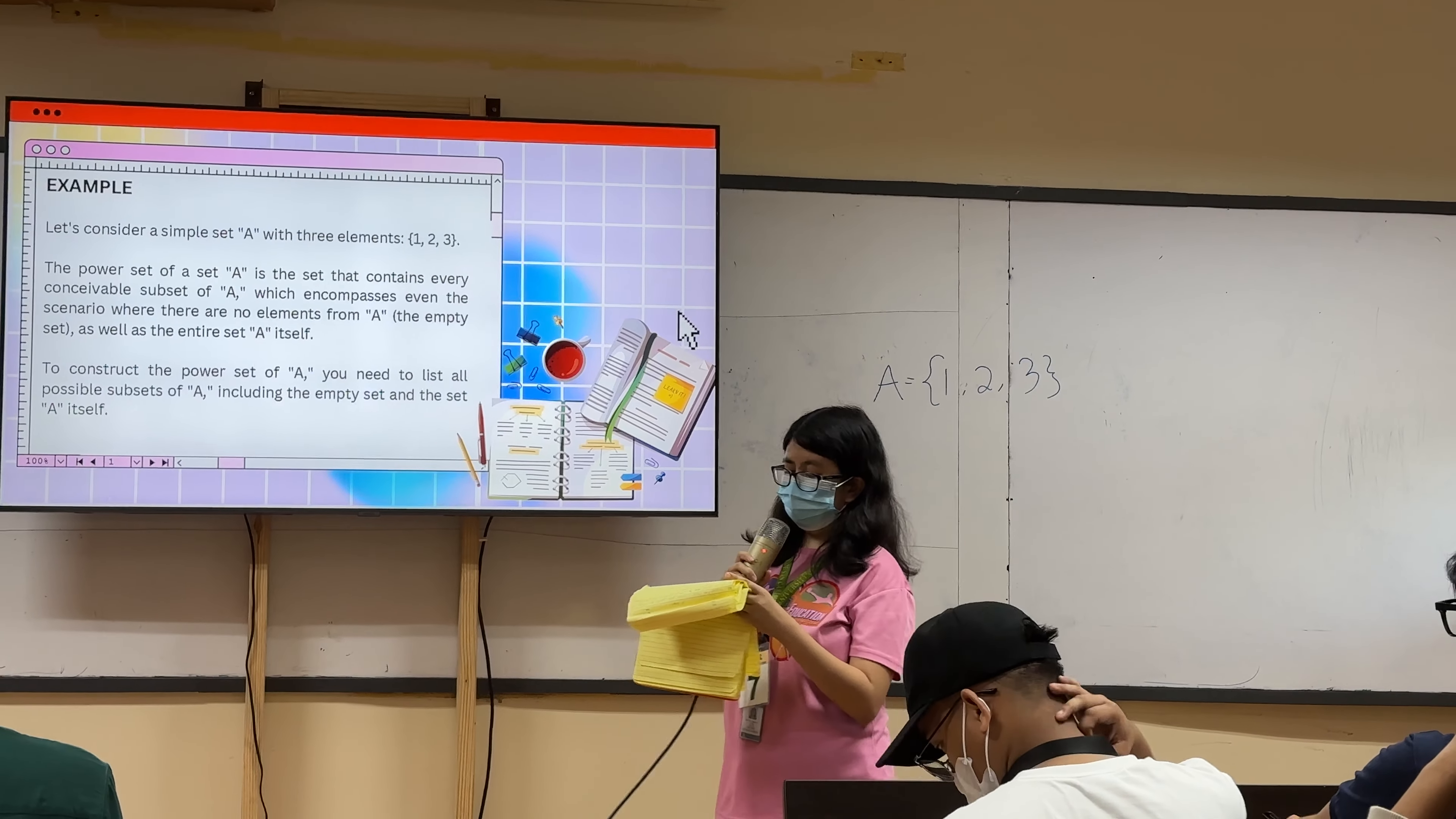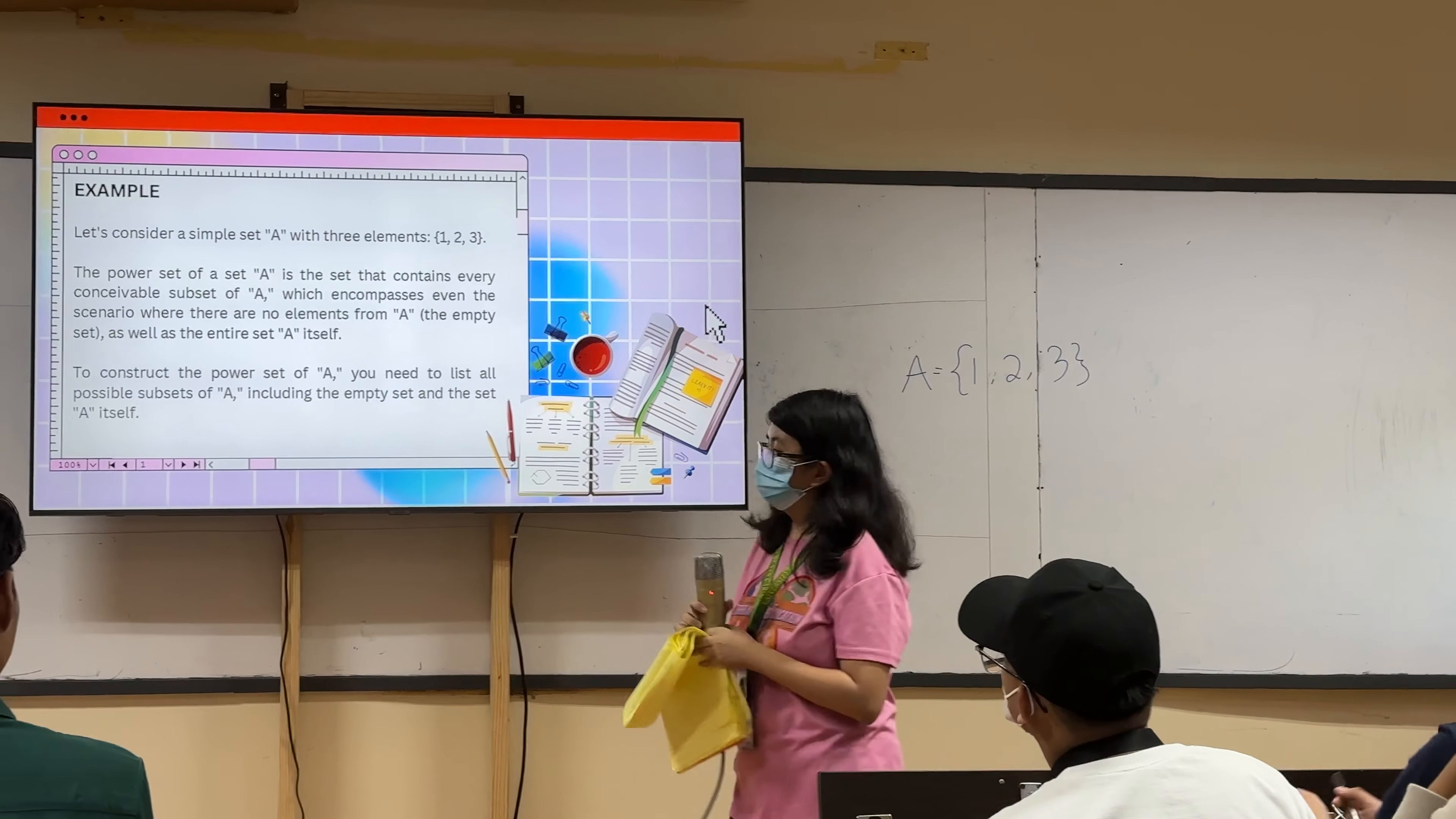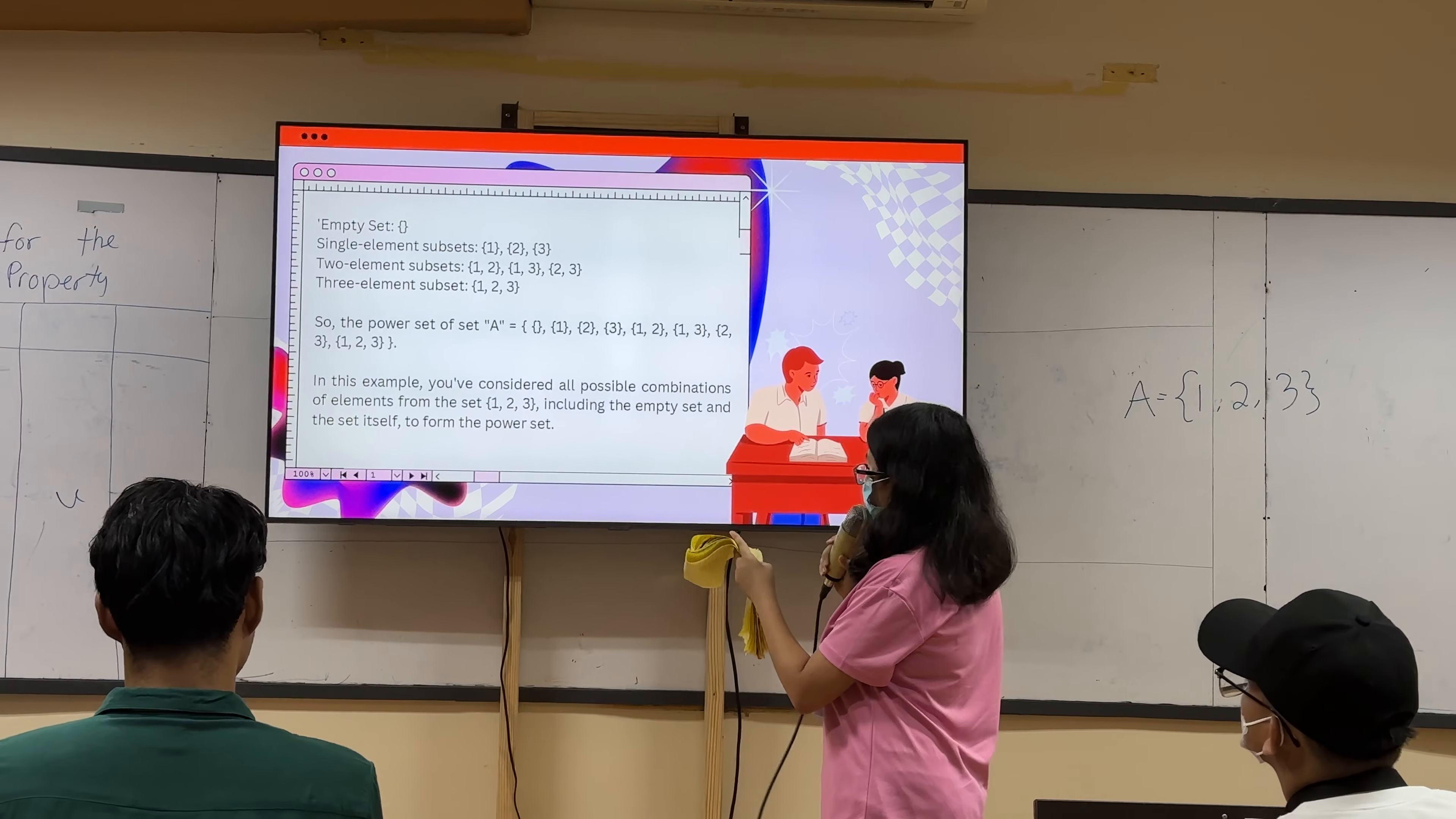To construct the power set, let's list all of the possible subsets of set A. From where there are no elements, from set A or empty set, the individual element itself or single element subsets 1, 2, and 3.